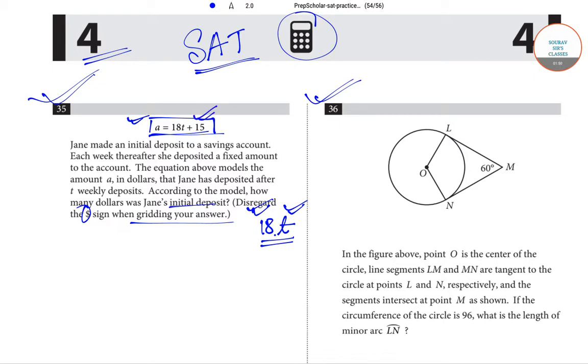Here, 15 represents the initial deposit of Jane. So, how many dollars was Jane's initial deposit? Our answer for this will be 15.